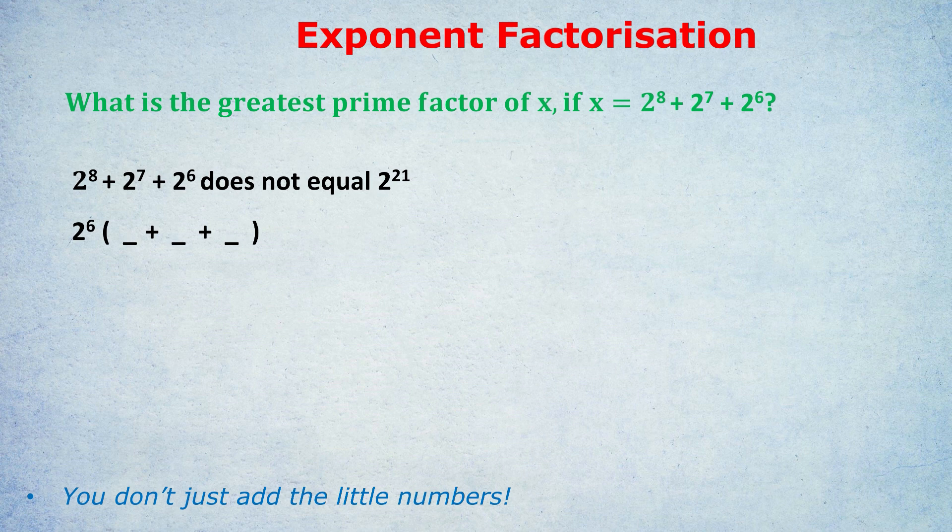The answer would be 2 to the power of 2. Why? Because if we multiply down that bracket, 2 to the 6 times 2 to the 2, because it's multiplied, you add the little numbers. 6 plus 2 gets us back to the 8. So the trick here is to think of what do I need to add to the little 6? In this case, that would be a 2.